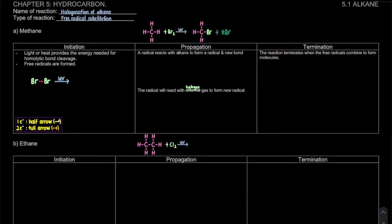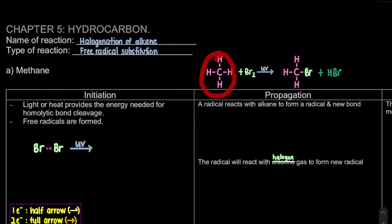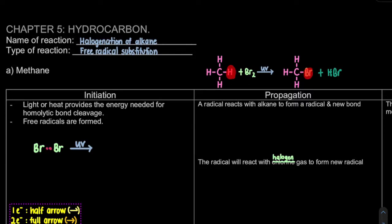For the reaction of methane - halogenation of alkane - the halogen can be either bromine or chlorine. What I have here is CH4 reacting with bromine. For the halogenation of alkane, it is important for you to draw the arrow and include the UV above the arrow. Since this is a substitution reaction, we will substitute one of the hydrogen with our halogen - in this case bromine. This carbon is a primary carbon, so all of the hydrogen here is primary hydrogen as well. Any hydrogen can be substituted. I'm substituting the hydrogen on the right-hand side with my bromine, and I will have my byproduct HBr.